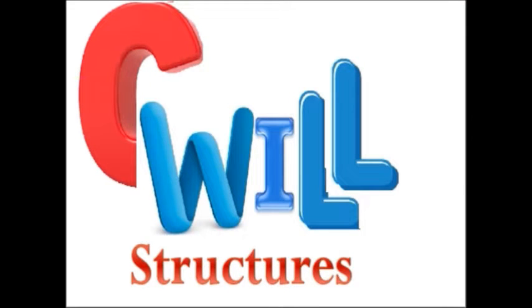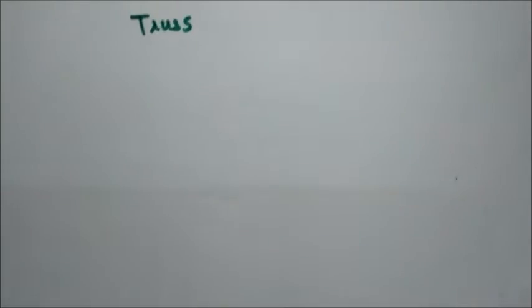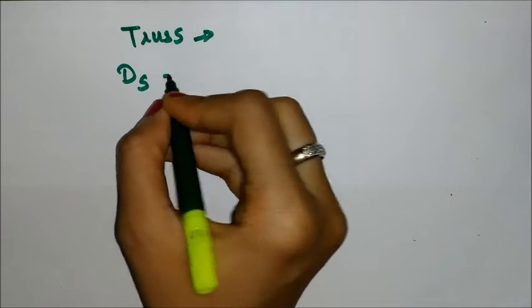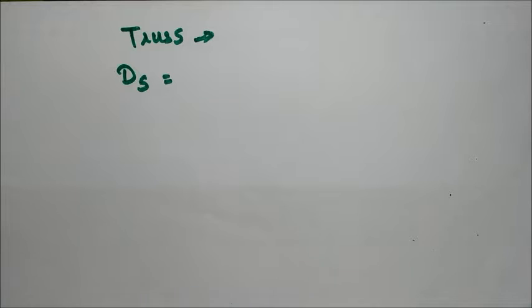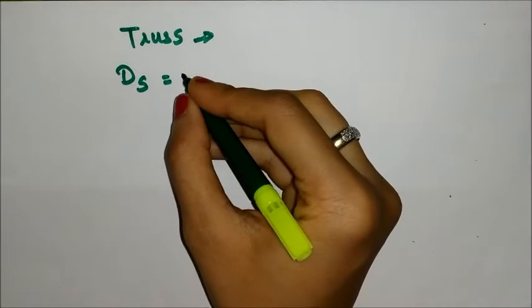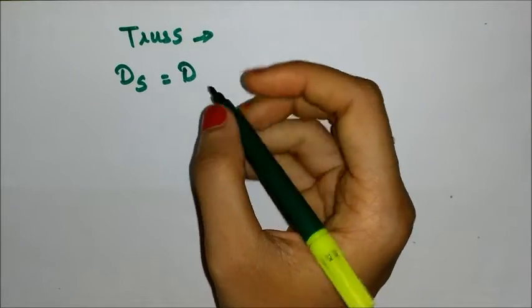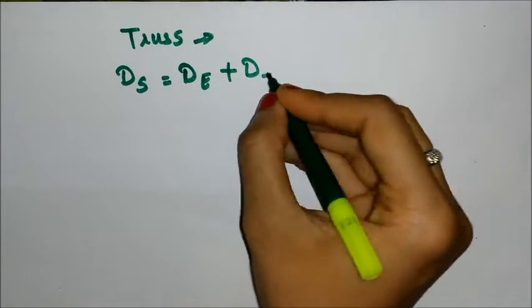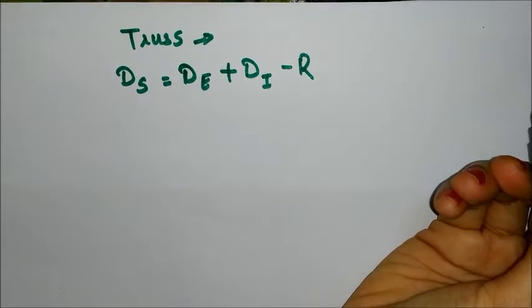Hello friends, welcome to my channel Civil Structures. Today we study about statically determinate and indeterminate structures for trusses. In the previous lecture I told you about the definition and the formula for statically determinate and indeterminate, and how we can determine it for beams and other elements. Now today let's see the formula for truss static indeterminacy, which you can define by external indeterminacy, internal indeterminacy, and if there are any type of releases in the structure.